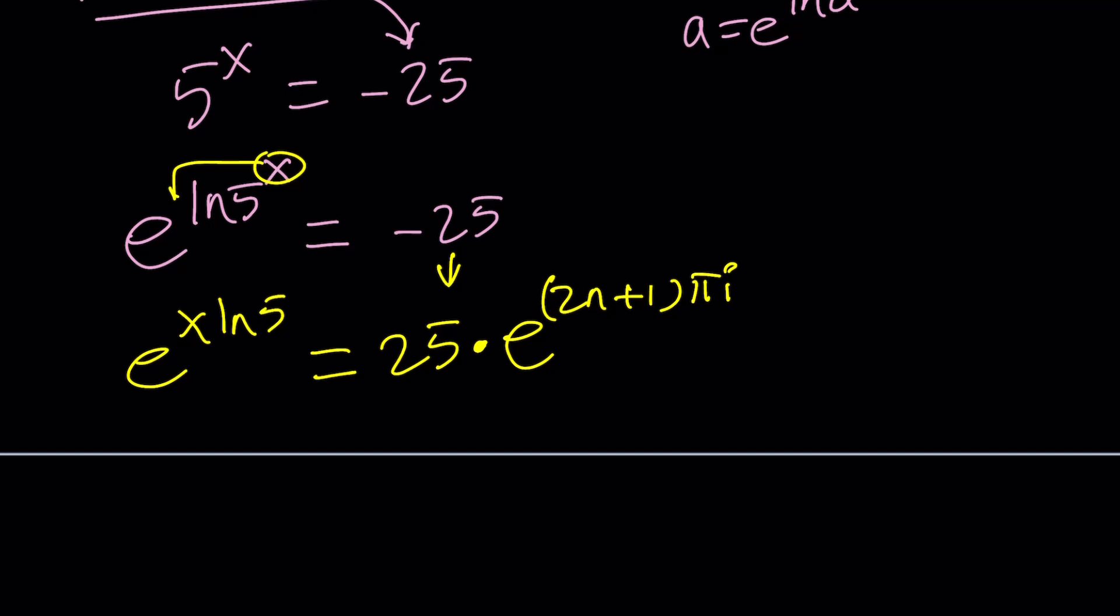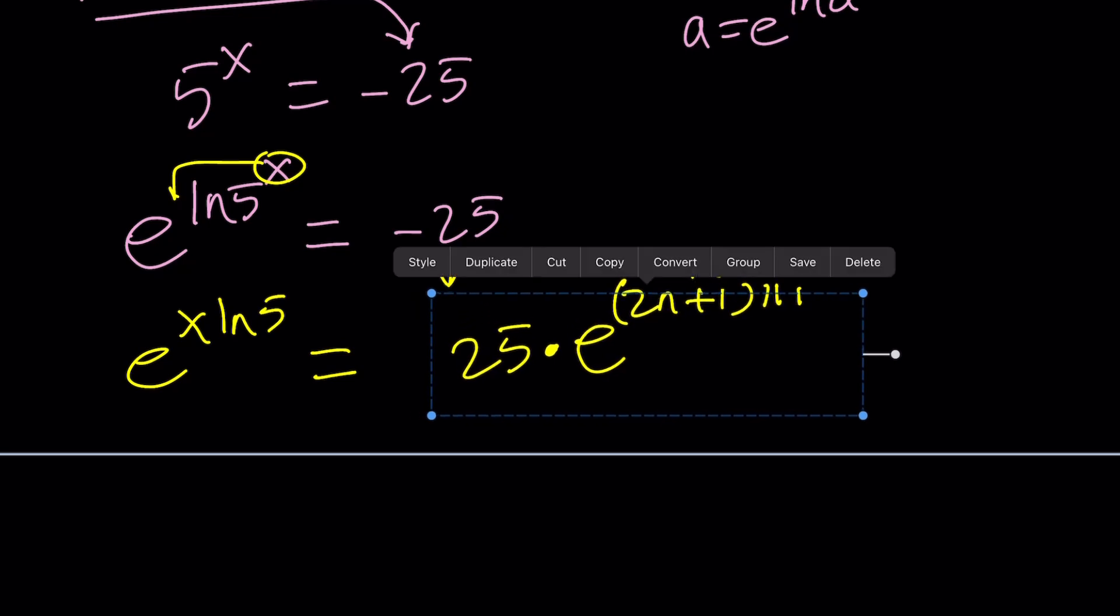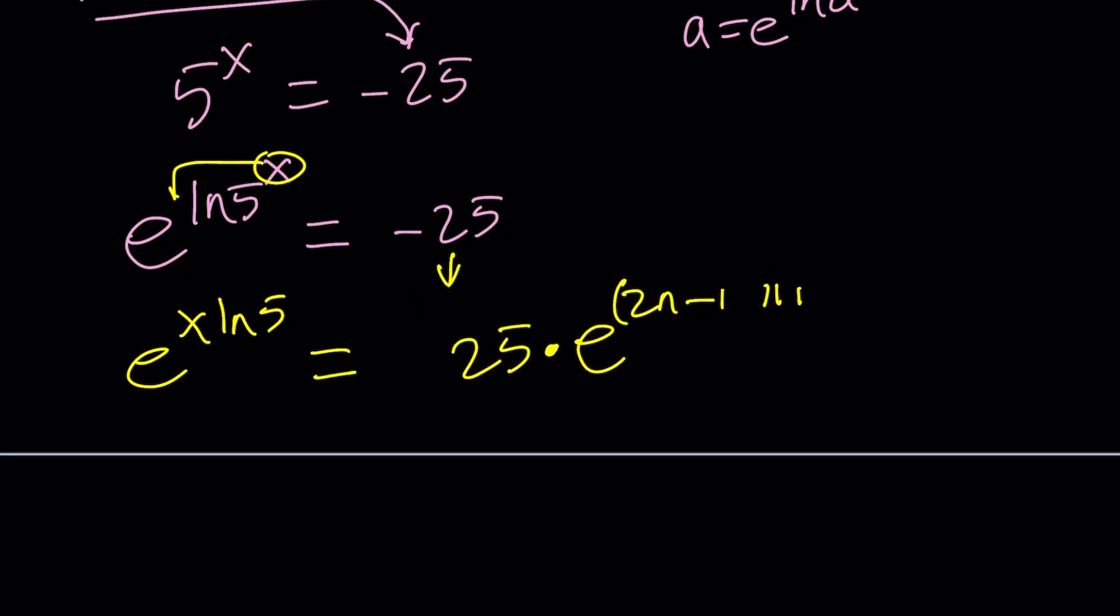Okay, so what do you do next? Since we have the e's, we can go ahead and natural log both sides. Let's go ahead and move this a little bit to the right. I guess it's going to work. And then we might have to just erase a little bit. Okay. 2n plus 1 and then pi i. Cool.